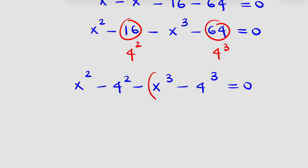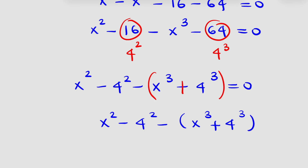So what I have is x squared minus 4 squared minus x raised to power 3 plus 4 raised to power 3 is equal to 0.